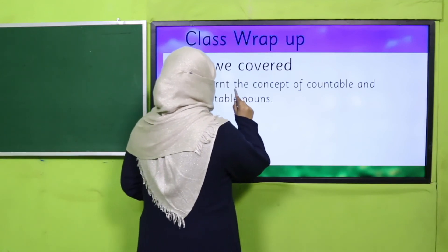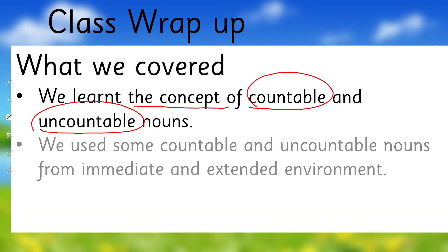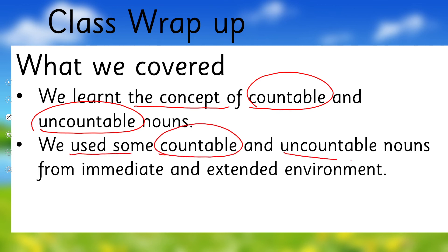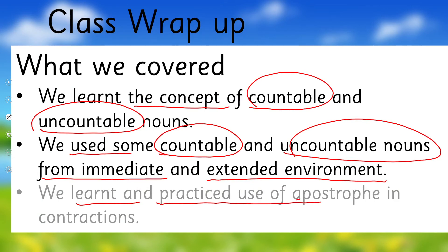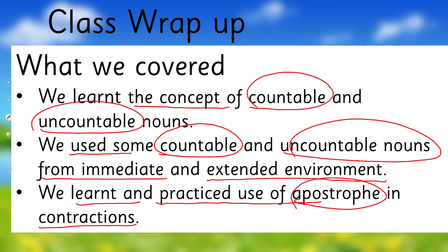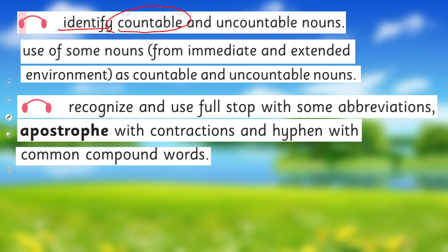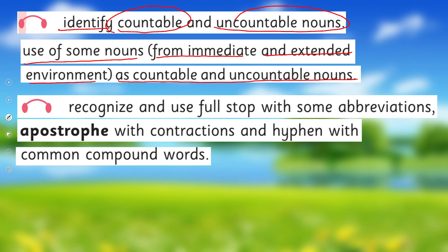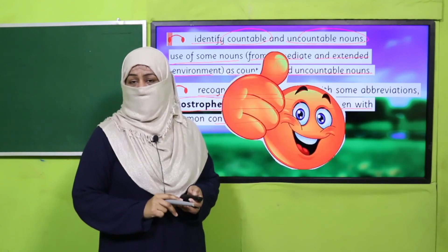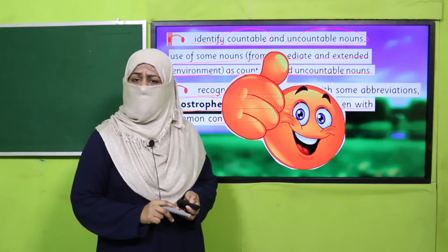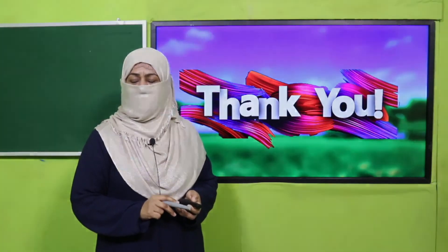In this way, we have learned the concept of countable and uncountable nouns, used some countable and uncountable nouns from immediate and extended environment, and learned and practiced use of apostrophe in contraction. We have achieved today's SLOs: to identify countable and uncountable nouns, use nouns from the immediate and extended environment as countable and uncountable, and recognize and use apostrophe with contraction. Full stop and hyphen we will practice later. That's it for today — tomorrow I will come again with a very interesting lesson. Keep practicing, keep learning, take very good care of yourself and the people around you. Thank you and Allah Hafiz.